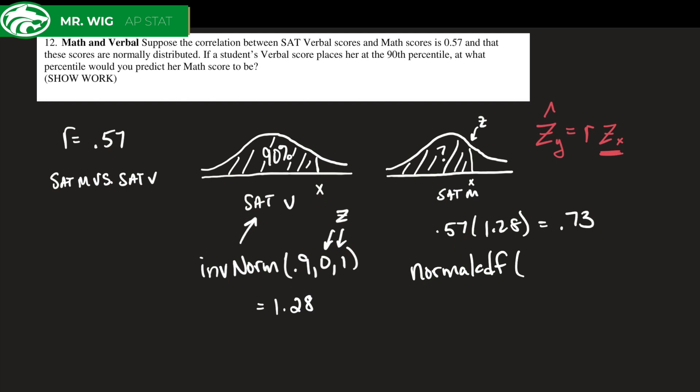We're going to be finding the area. We know that z-score is 0.73, so we're going to go from negative infinity, negative 99, all the way up to 0.73, which is almost three-fourths of a standard deviation above the mean.